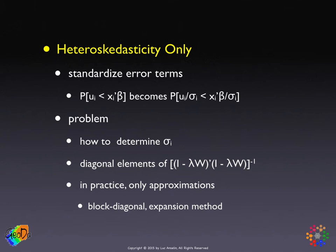Let's look at the approach that only corrects for heteroscedasticity. In essence, it becomes an adjustment of the probability condition: the probability that y_i equals one is the probability that the error term is less than x_i' beta, and both sides of this inequality are scaled by sigma_i. The problem is — what is sigma_i? There is no way to estimate a separate variance term for each observation.